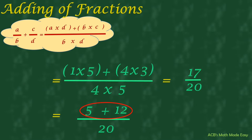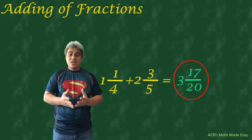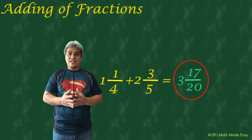We can now add the numerators: 5 plus 12 equals 17. Remember that we already added the whole number, and our answer is 3. Just combine it with the fraction. So, 1¼ plus 2⅗ equals 3 and 17 over 20.